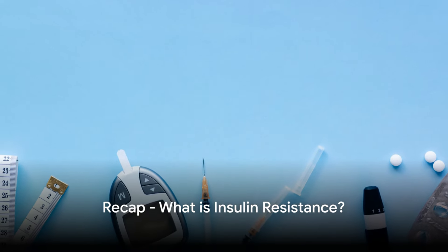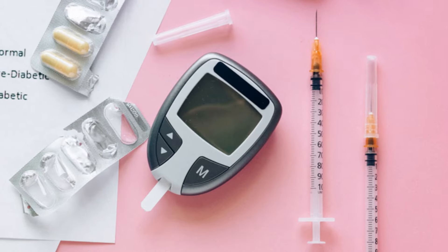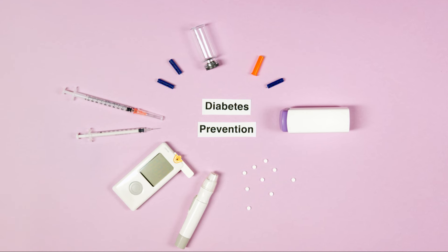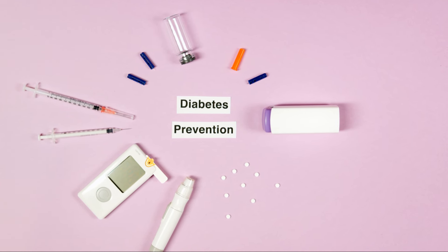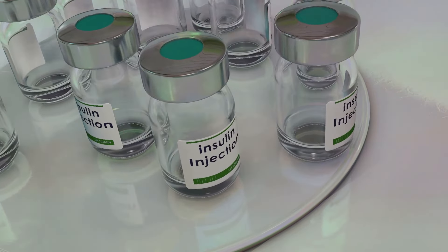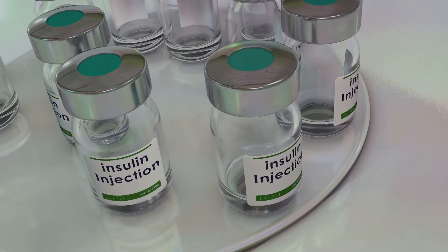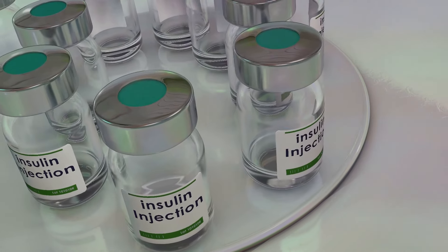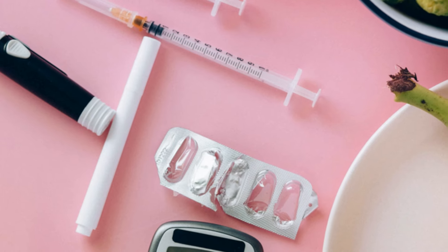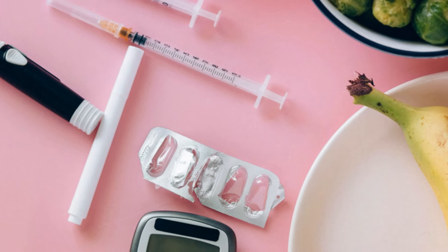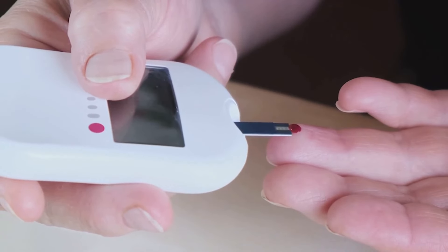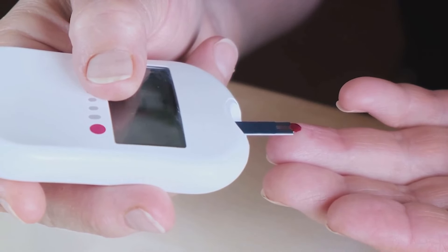First, let's quickly recap what insulin resistance is. Picture this: your body is a bustling city, and insulin is the key that unlocks the doors to your cells, allowing glucose or sugar to enter and be used as energy. Now, imagine a scenario where the locks start to rust and the keys don't work as well. This is insulin resistance. The keys, or insulin, struggle to open the doors, or your cells, causing glucose to build up in your bloodstream. Over time, your body compensates by producing more insulin.